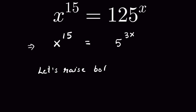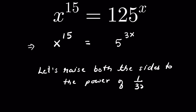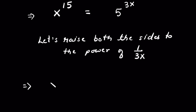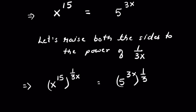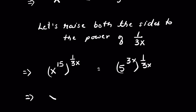Now let's raise both sides to the power of 1 upon 3x. So we have x raised to the power 15, whole raised to the power 1 upon 3x, is equal to 5 raised to the power 3x, whole raised to the power 1 upon 3x. This gives x raised to the power 15 times 1 upon 3x, equal to 5 raised to the power 3x times 1 upon 3x.